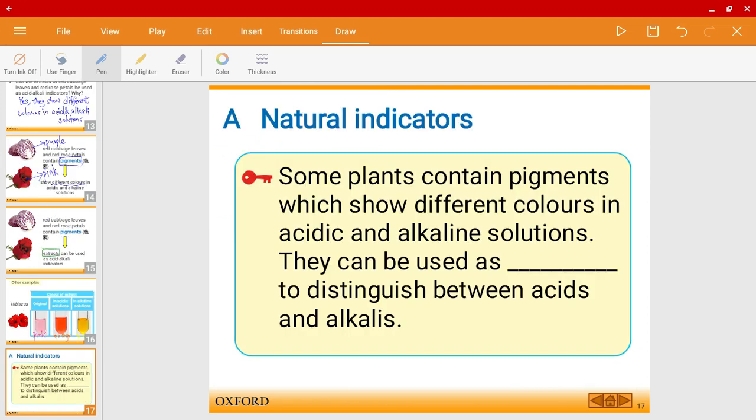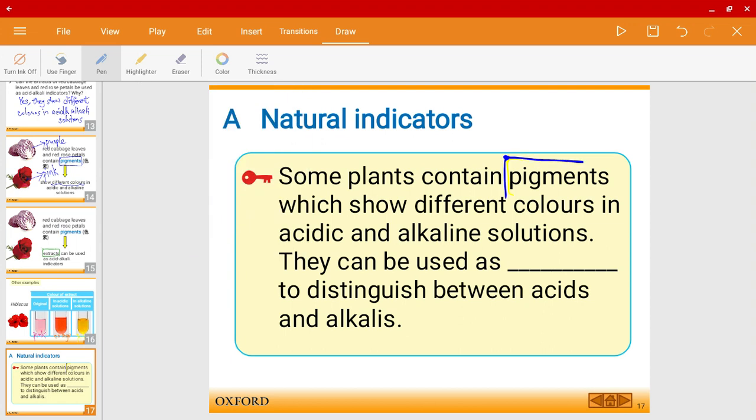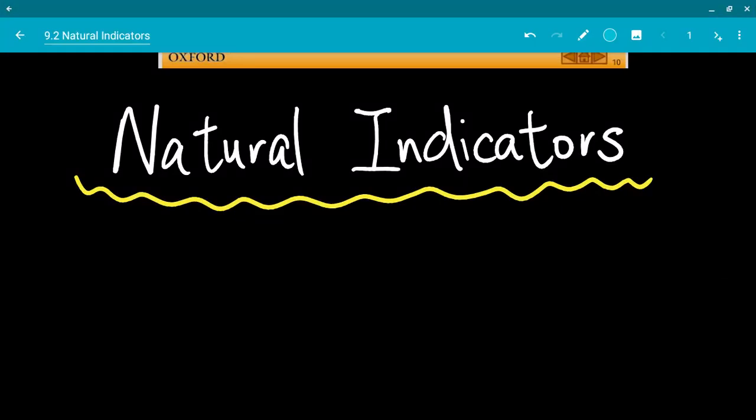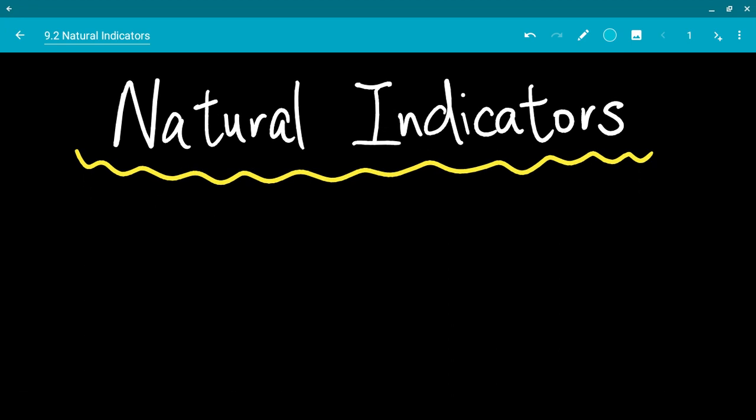So to wrap up, some plants contain pigments. Pigments, which show different colors in acidic and alkaline solutions, and they can be used as indicators to help us distinguish between acids and alkalines. So just to, before we head into why red cabbage is called the red cabbage, just to summarize what we have learned.